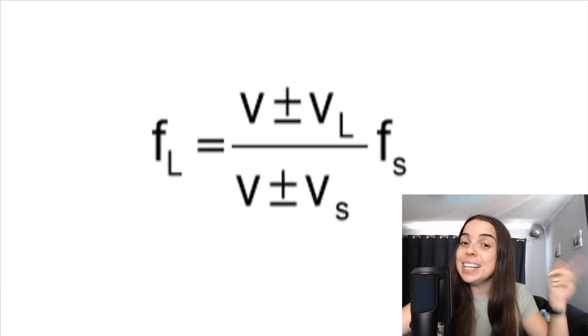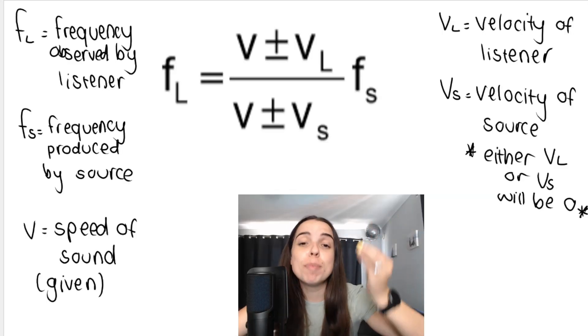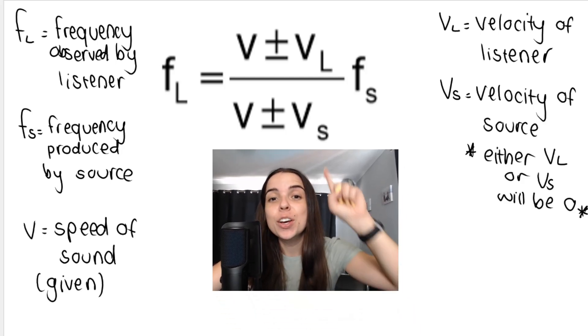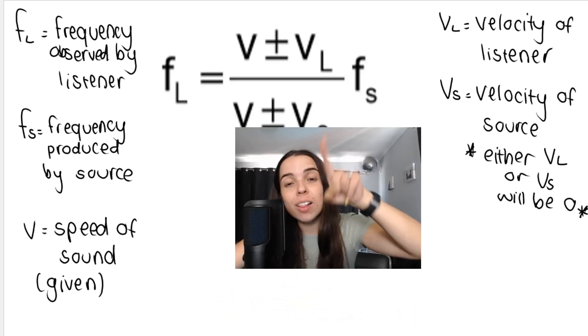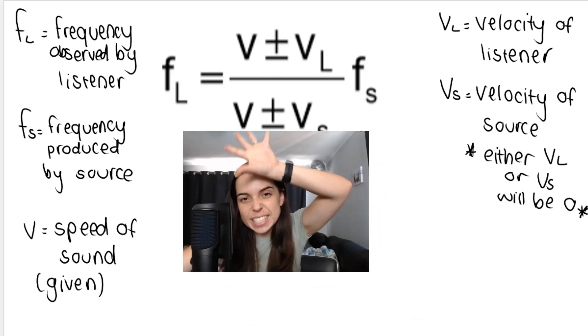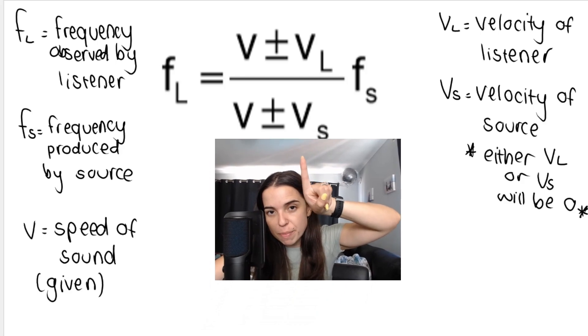But as a brief reminder, this is the Doppler effect equation and this is what all the different variables mean. Remember either the source or the listener will be stationary, so either VS or VL will be zero. Remember, when you answer the Doppler effect question, you have to write this exact formula, exactly what you see above my head.